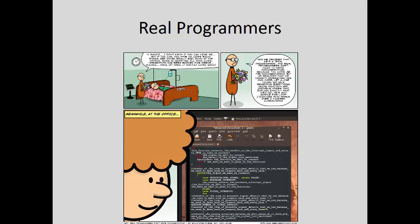The code shown reads: 'This function connects the handler to the interrupt signal and returns true in case of success. Int the signal we want to connect. Int the detail of the signal we just mentioned. Handler func the function we want to connect. Void star the data we want to pass to the function.' Yes, they're hundreds of characters long. In a lot of undisciplined teams, programmers insist the code is the documentation. While agile methodology will eschew excess documentation such as specifications, there's still the need for end user documentation as well as commentary to describe how to maintain the code.